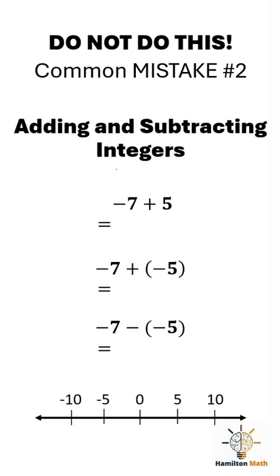Let's start with negative 7 plus 5. A common mistake is just to ignore the signs and say 7 plus 5 is 12, and then slap on a negative, negative 12. But that's wrong.